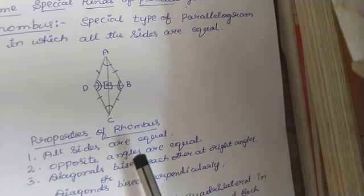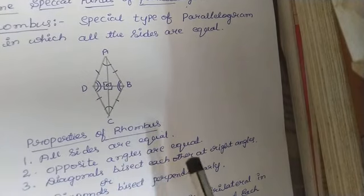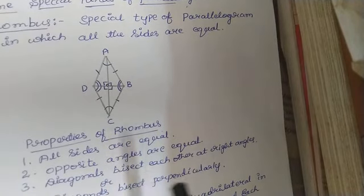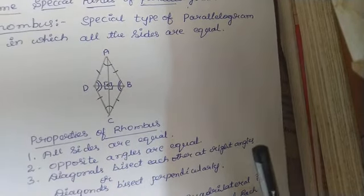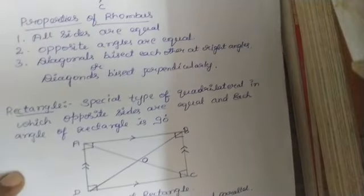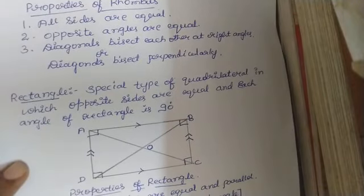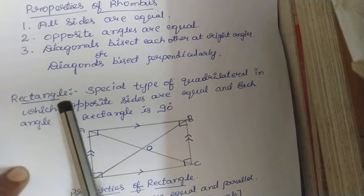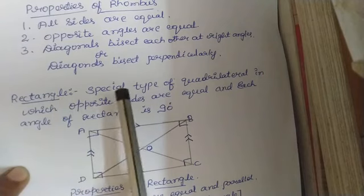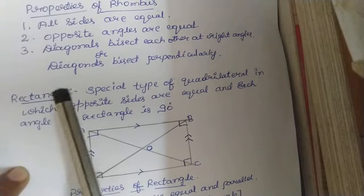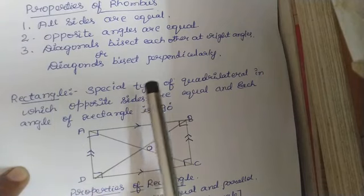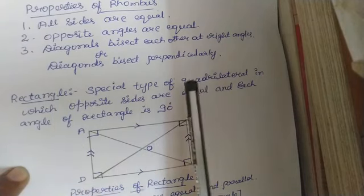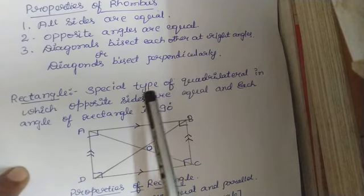These are the special properties of rhombus. Rhombus is nothing but a diamond shape. The next special kind of parallelogram is rectangle. You are well known with rectangle, and you have also solved the problems of rectangle in your previous classes.